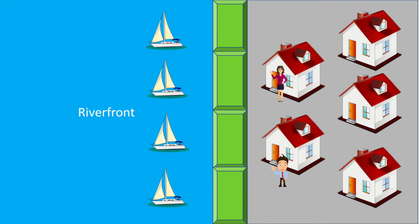Also, remember the non-rivalrous feature of public goods — you cannot reduce the amount of flood defence available to others by building a flood defence system. In this case, the government is best placed to build and pay for the development of flood defences. It can collect the funds through tax and develop a system that protects the entire area.